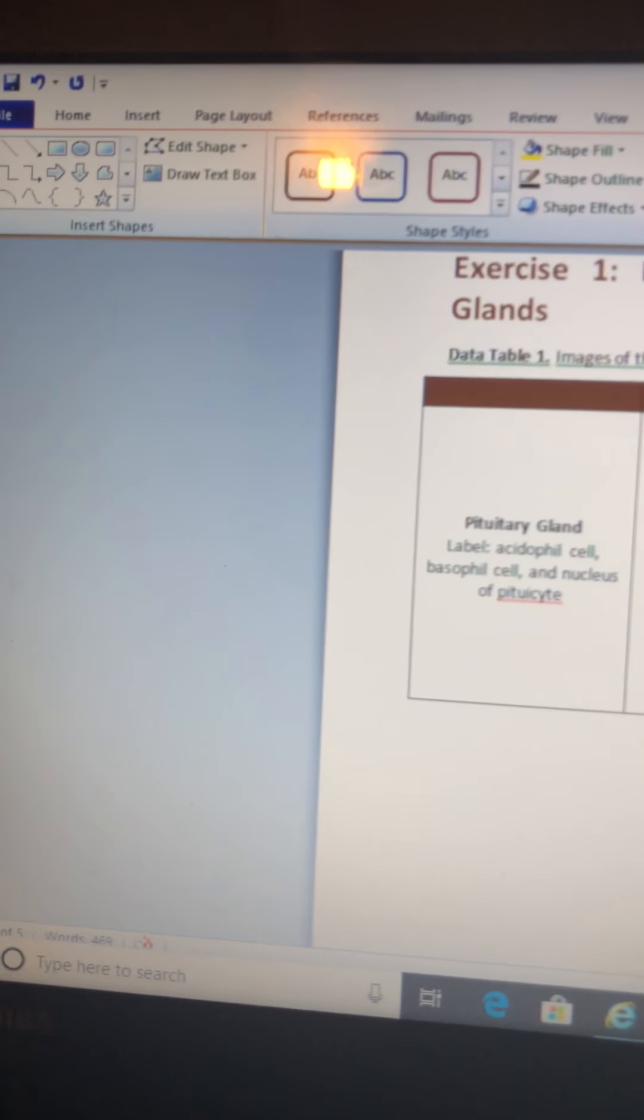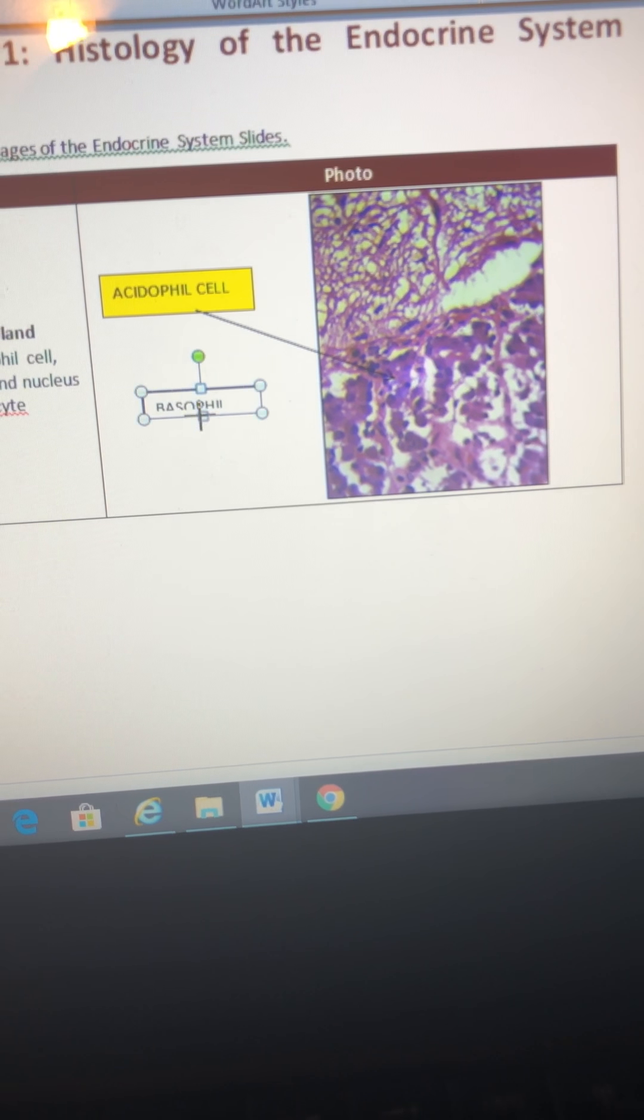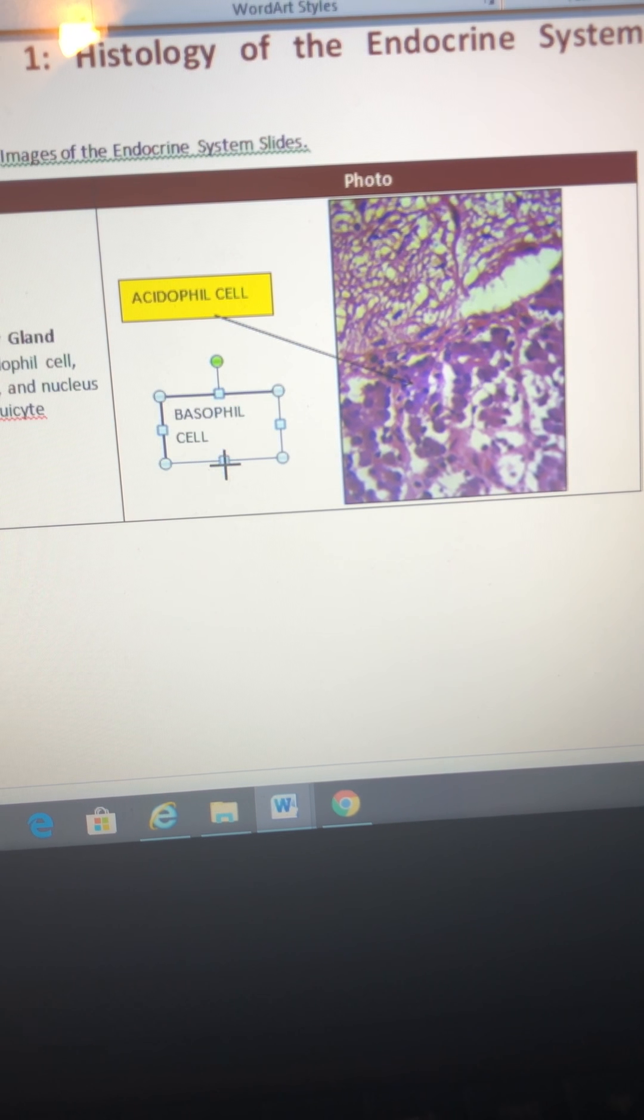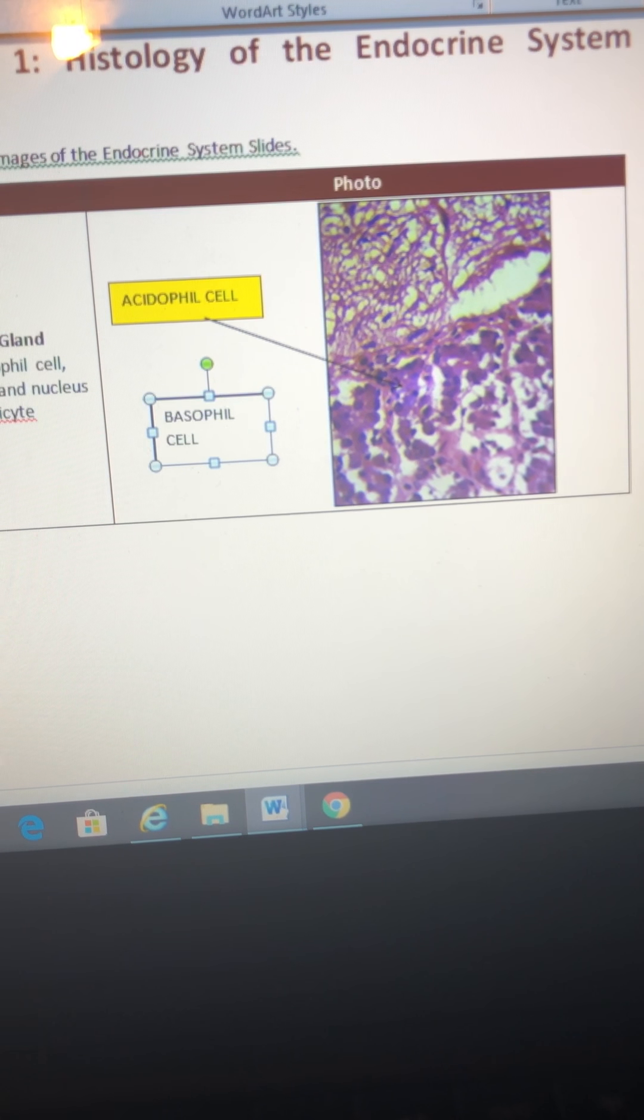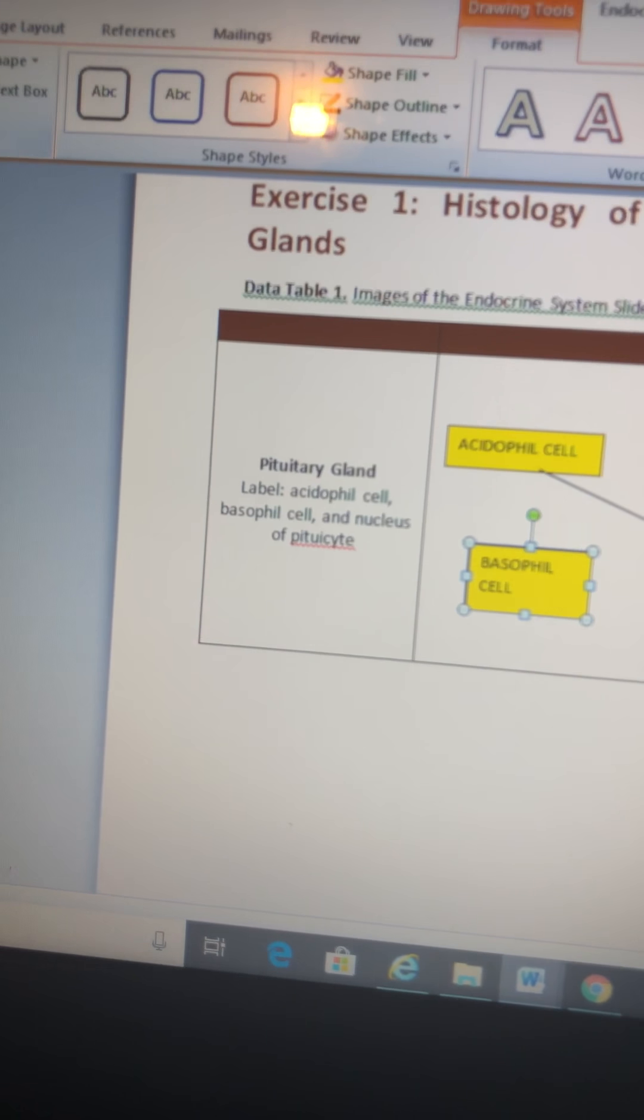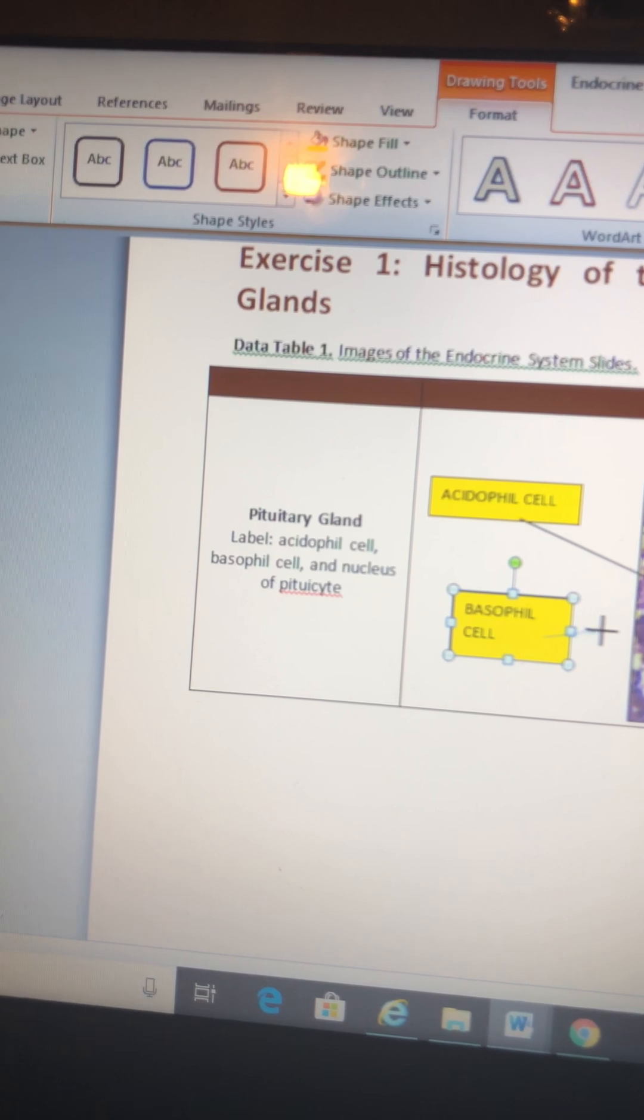What I'm going to do is first we have to label the acidophil cell, basophil cell, and nucleus of pituicyte. So I'll go to Insert, and I'll get a text box. I'm going to put the acidophil cell.